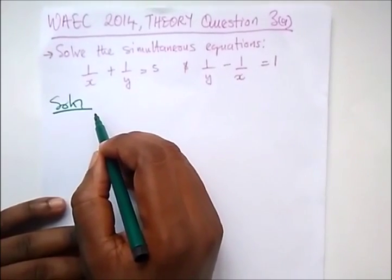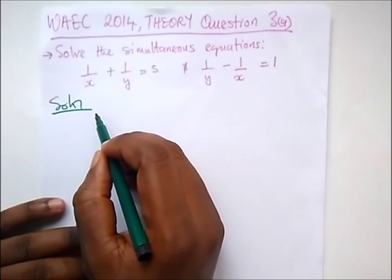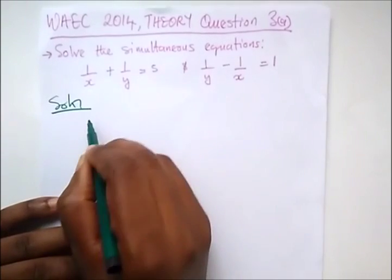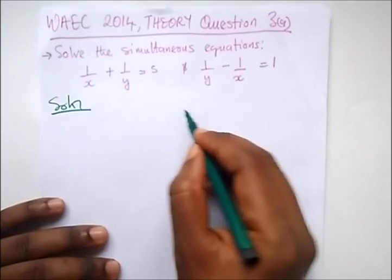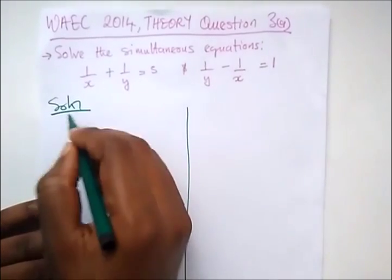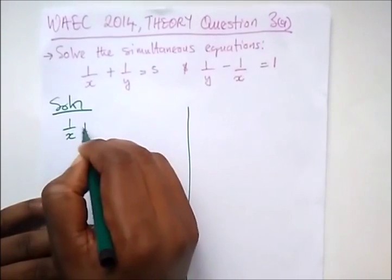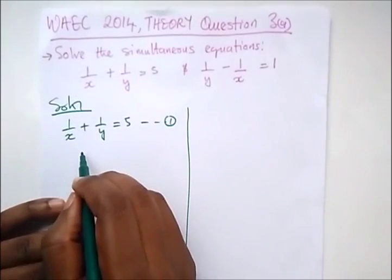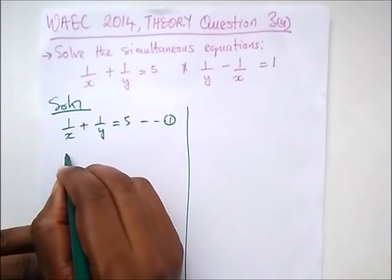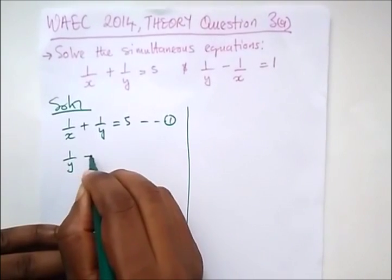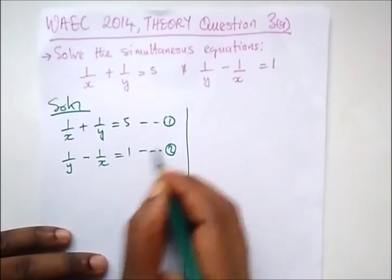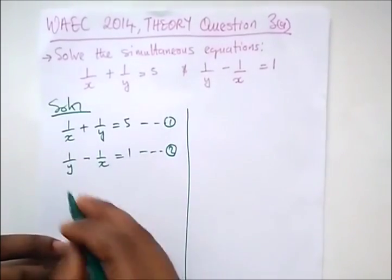I always prefer to use the elimination method to solve simultaneous equations because it's better and easier. So here we have equation one: one over x plus one over y equal to five — that's equation one. And equation two is one over y minus one over x equal to one — that's equation two.